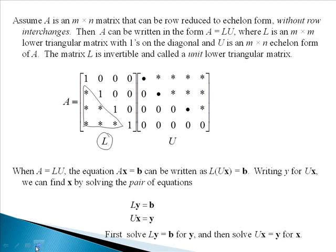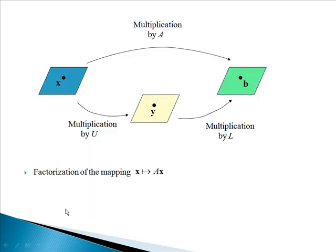First, you solve Ly equals B for Y, and then you solve Ux equals Y for X. Here is a picture of what we're talking about. Normally, we take our vector X, multiply it by the matrix A, and produce our vector B. But with the LU factorization, we're taking X, multiplying it by U to produce Y, then multiply that by L to produce B. When we're solving and going backwards to find X, we're undoing this essentially, solving for Y first and then solving for X.